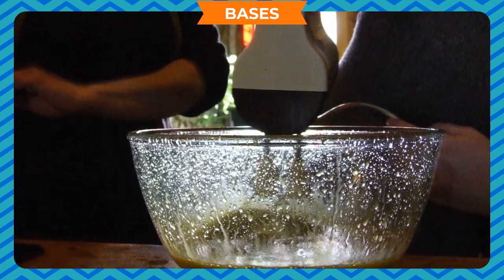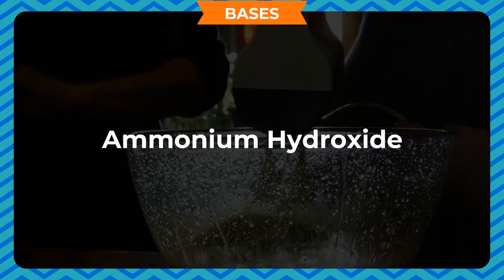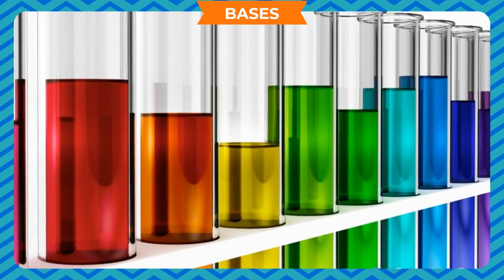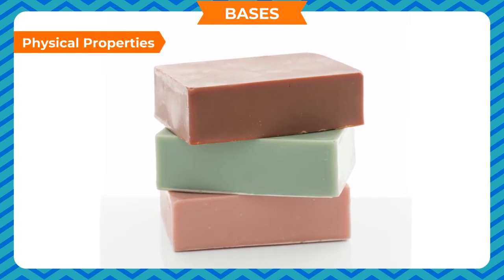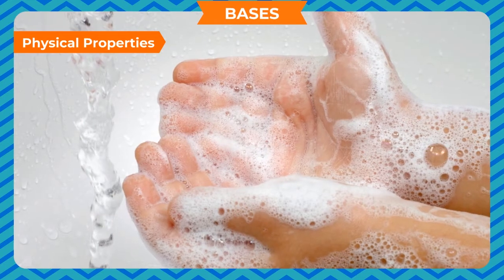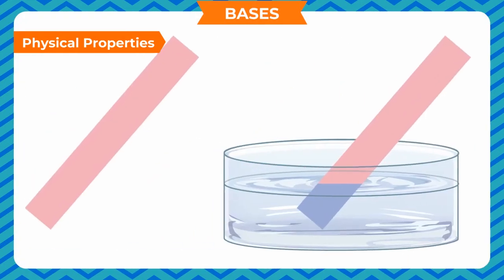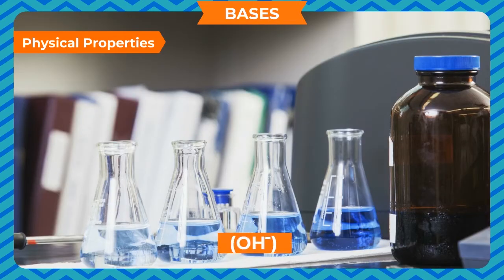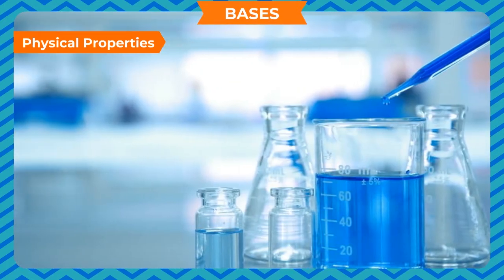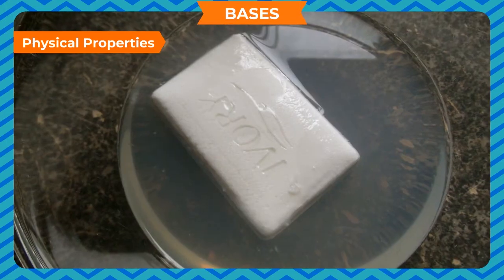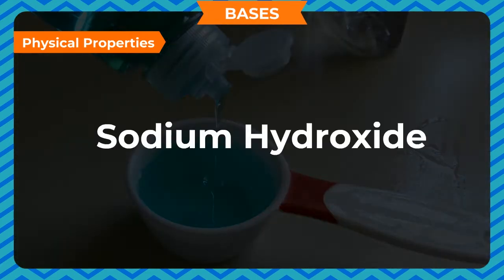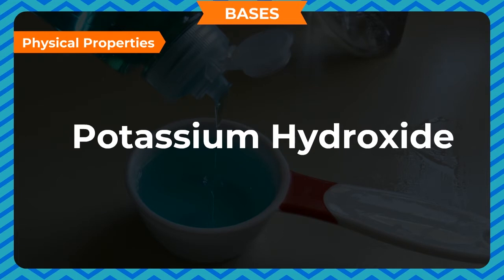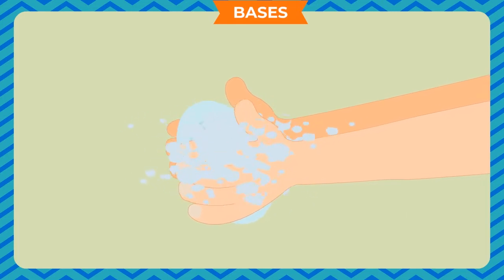Bases which are either soluble or sparingly soluble in water are said to be weak bases — for example, ammonium hydroxide and aluminium hydroxide. Strong bases are those easily soluble in water — for example, sodium hydroxide. Physical properties of bases: bases are bitter in taste; they feel slippery and soapy when felt between fingers; bases turn red litmus blue; they release hydroxide ions (OH−) in water solutions. Strong bases are corrosive. Those bases which are soluble in water are called alkalis — for example, sodium hydroxide and potassium hydroxide.